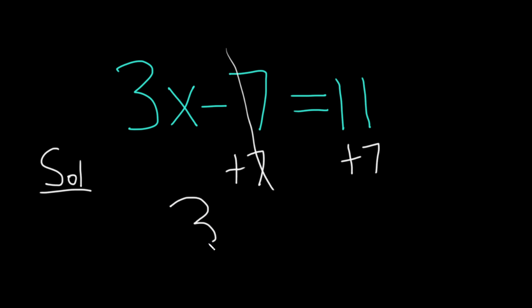So you're left with 3x equals, and then here we have 11 plus 7, which is 18. And then because x is being multiplied by 3, to undo that you use division. So we end up with x equals 18 over 3, so x equals 6.